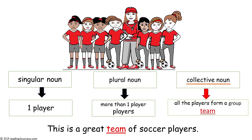With kids, review the nouns that were shown in this example. A singular noun is one player. A plural noun is more than one player, which becomes players. And a collective noun is when all the players form a group, and that is a team.